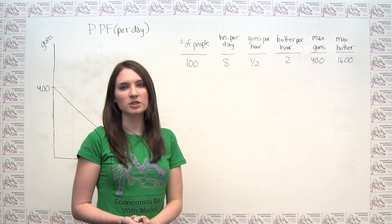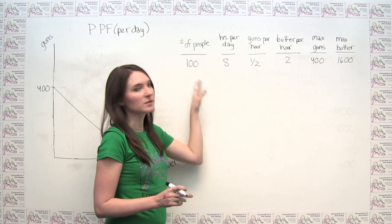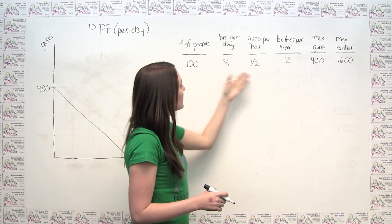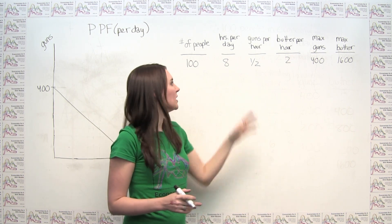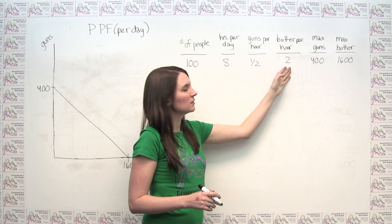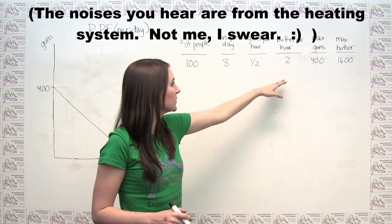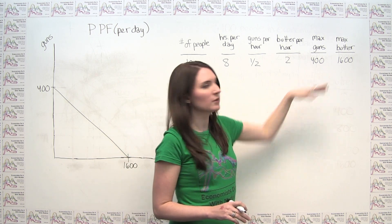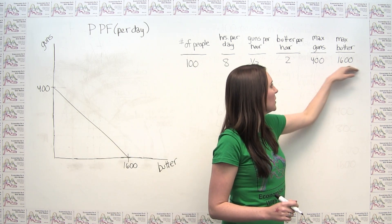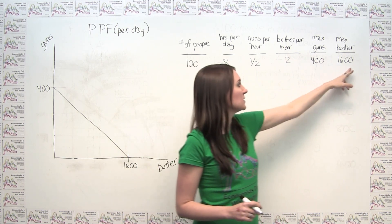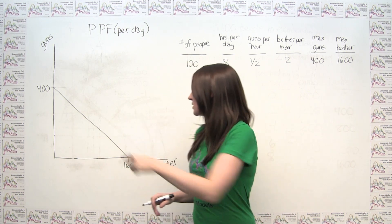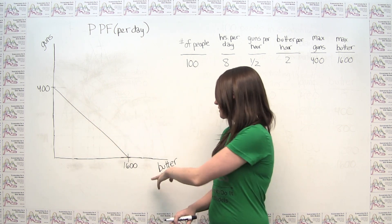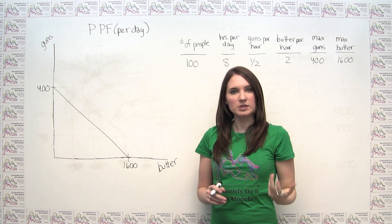Continuing our original production possibilities frontier example, we have the following setup as our status quo. We had 100 people in our economy. Each person was working eight hours a day. They had a choice each hour of working time: they could either make one half of a gun, or they could make two pounds of butter in an hour. The maximum number of guns that this society could produce was 400, if they did nothing else. And the maximum pounds of butter that this society could produce is 1,600, if they did nothing else. The production possibilities frontier is a straight line because we have a constant opportunity cost of butter.